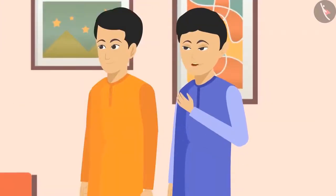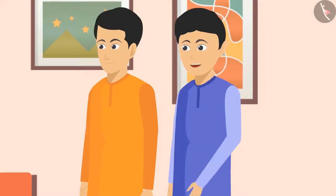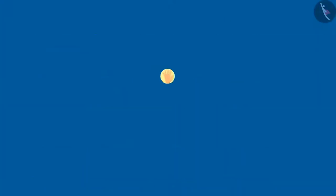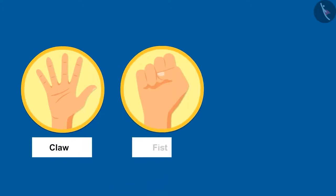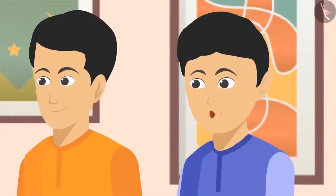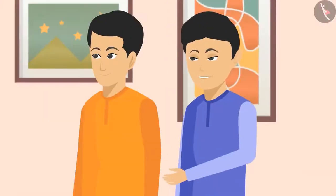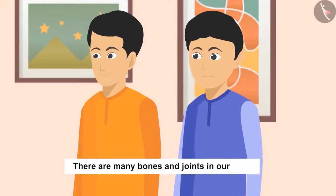'Look, our palms are one of the most flexible parts of our body. We can spread our fingers like a claw, make a fist, and move our palms in various ways — to the right as well. We can do this because there are many bones and joints in our palms.'